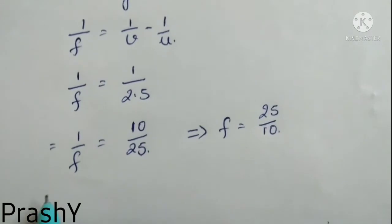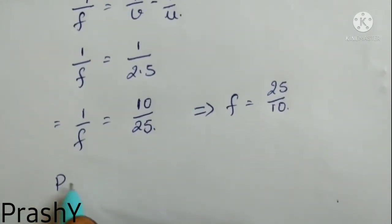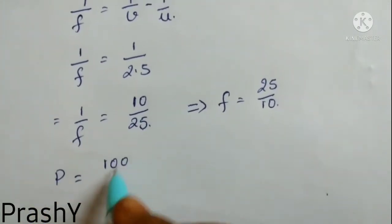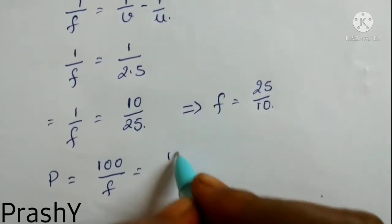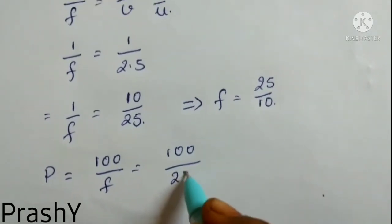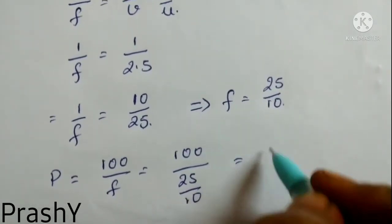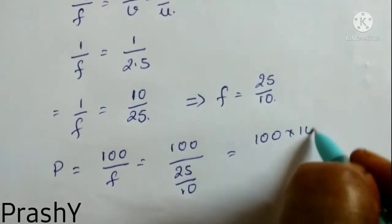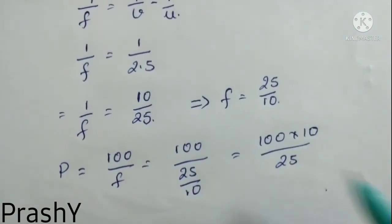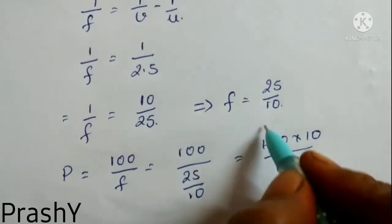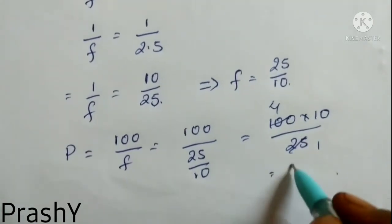Now from here we have to find the power. So we know that power of the lens P is equal to 100 by f. So substituting the value of f here, 25 by 10, so I will get 100 into 10 by 25. So 25 ones and 25 fours, so I will get 4 into 10, that is 40.